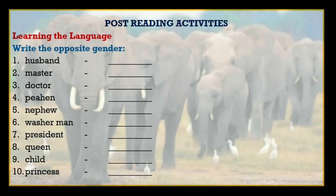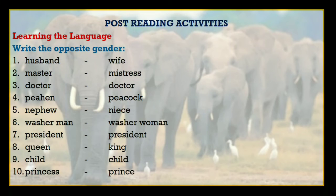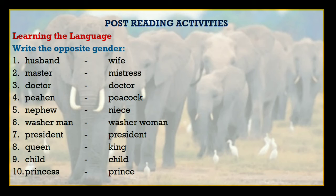These are the answers. Husband — the opposite gender of husband is wife. Master — mistress. Doctor — doctor. Pea hen — peacock. Nephew — niece. Washerman — washerwoman. President — president. Queen — king. Child — child. Princess — prince.